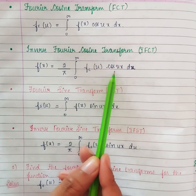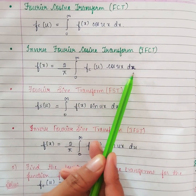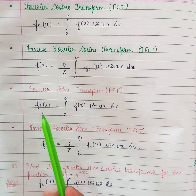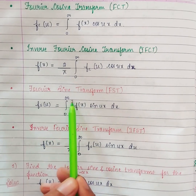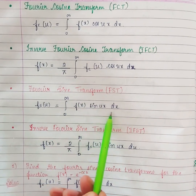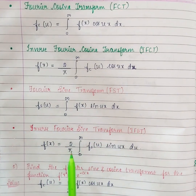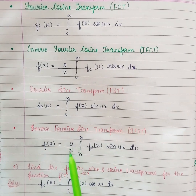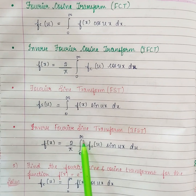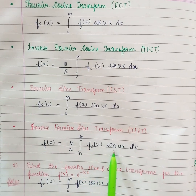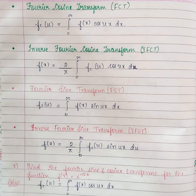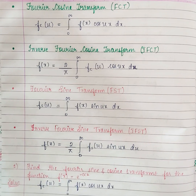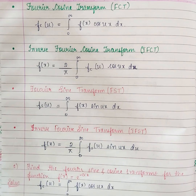Cos ux du. Same way you can guess the formula for Fourier sine transform: integral 0 to infinity f of x sin ux dx, and for inverse Fourier sine transform: 2 by pi integral 0 to infinity f of u sin ux du. These are the formulas for Fourier sine transform and its inverse.